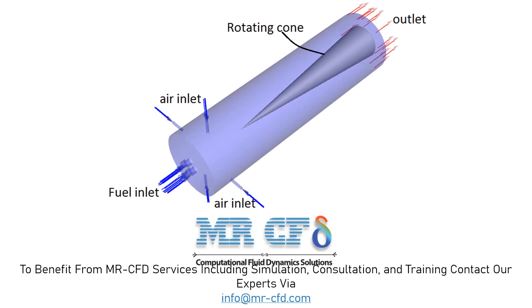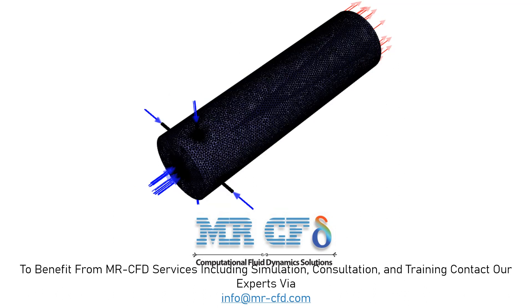The geometry of the present model is designed in ANSYS Design Modeler software, and consists of four fuel inlets on the bottom of the chamber and four air inlets on the side walls. Also, a rotating cone is placed in this chamber to cause a swirl flow within the chamber. The meshing of the present model is performed using ANSYS Meshing software, and its type is unstructured.